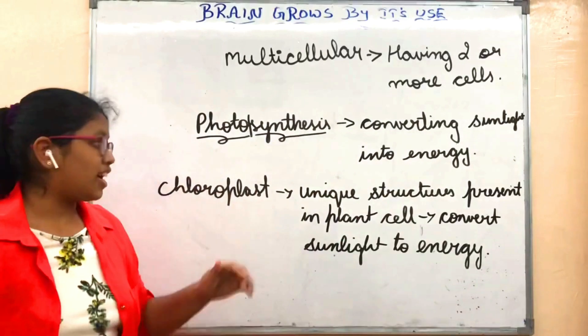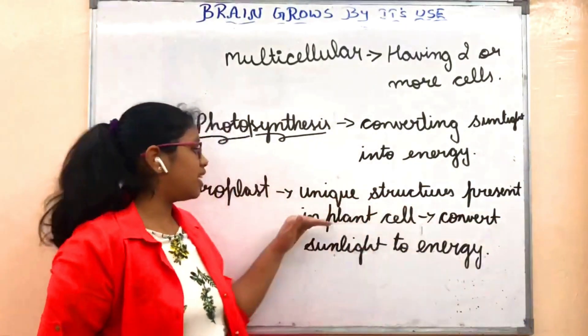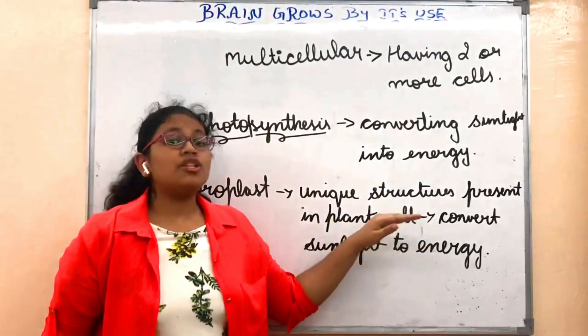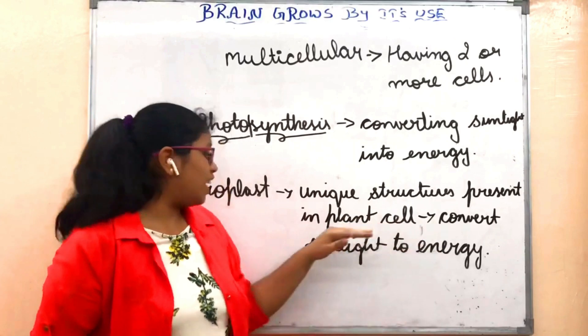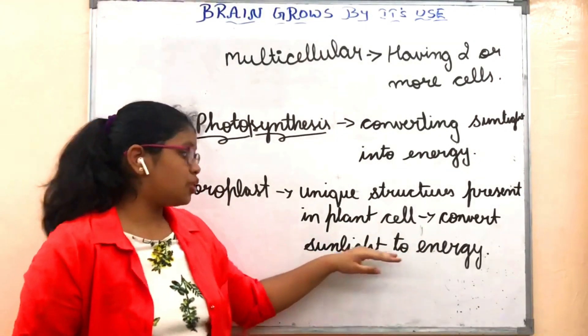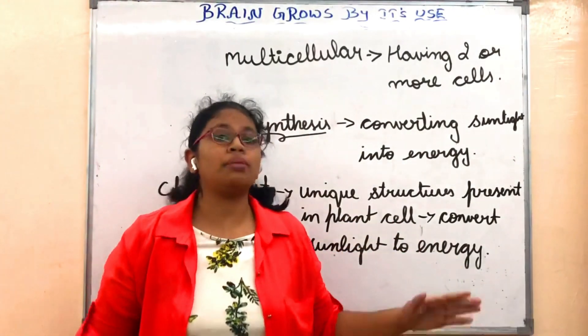Chloroplasts are the unique structures present in the plant cell. They are specialized in converting sunlight to energy, which is useful for the plants.